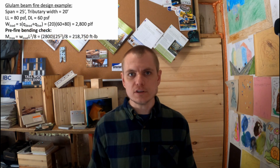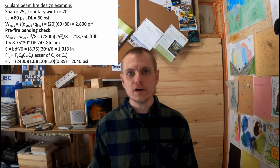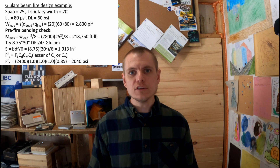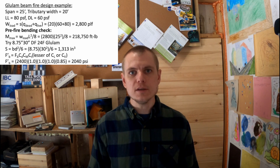First, we're going to calculate the section properties of our glulam beam. Running through these calculations — nothing new here — just calculating section modulus. We take our allowable bending stress, starting at 2400 psi, and adjust it with a number of factors from NDS. Really the only significant adjustment is the volume factor for this glulam beam: 0.85. So this drops our allowable bending capacity down to 2040 psi.